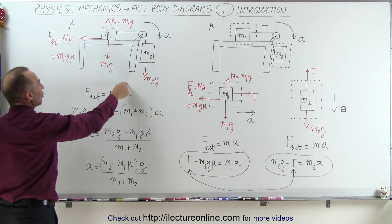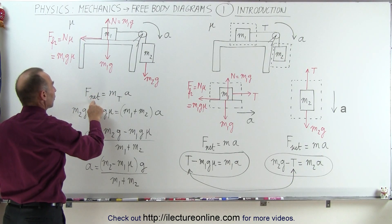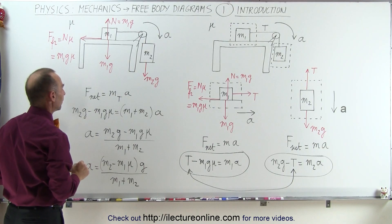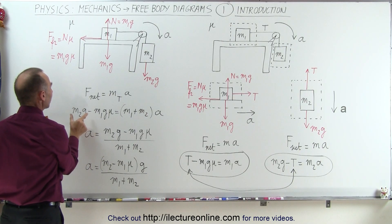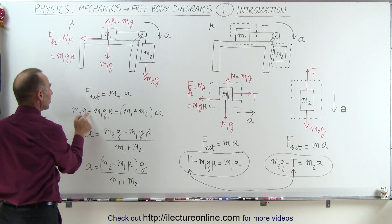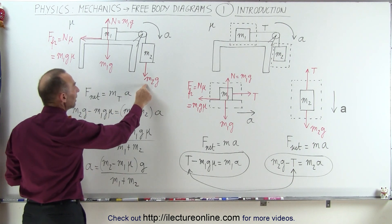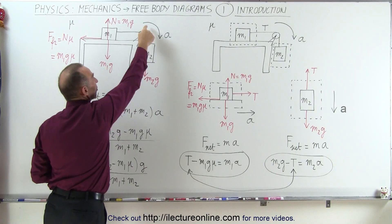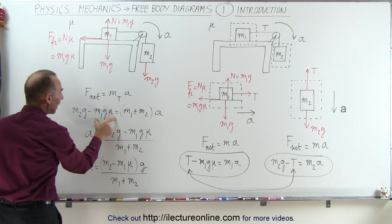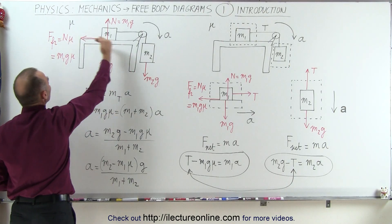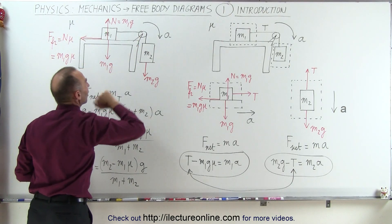We start with Newton's second law that says that the net force acting on the system equals the total mass of the system times its acceleration. The net force is always defined as all the forces aiding the acceleration minus all the forces opposing the acceleration. M2g is aiding acceleration because it's in the same direction as acceleration. M1g mu is opposing the acceleration because it points in the opposite direction of the acceleration.